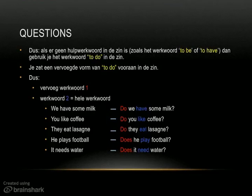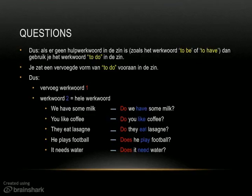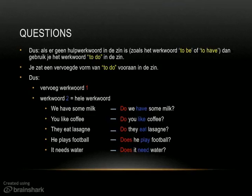How do you make the question? You put a form of the verb to do at the start of the sentence. Here are some examples: do we have some milk? Do you like coffee? What you notice is the form of the verb to do has been changed — so you have do you, do they, and of course does he, does she, does it. The second verb in the sentence is the whole verb — the infinitive: to have, to like, to eat, to play, to need. So the first verb you change and the second verb you leave as the whole verb.